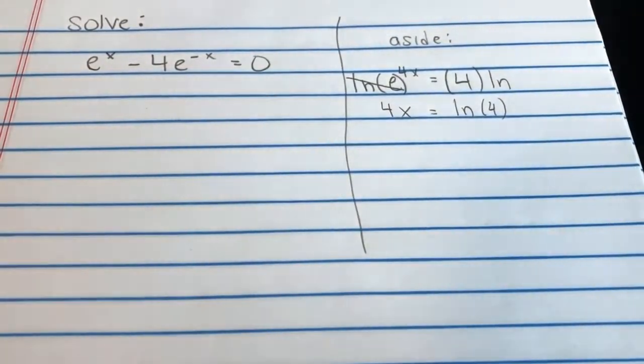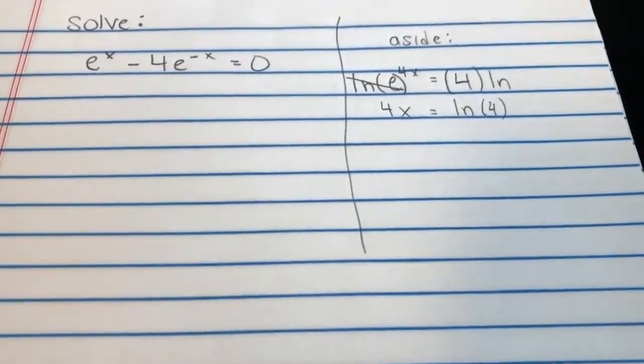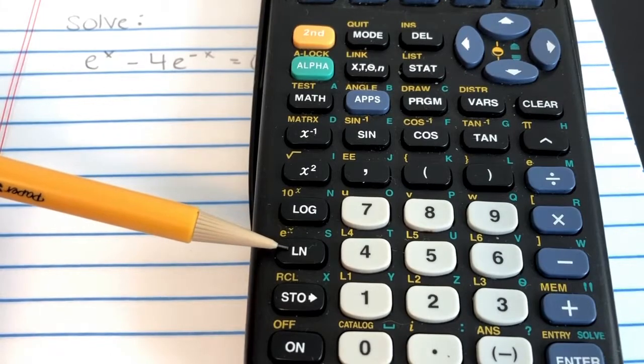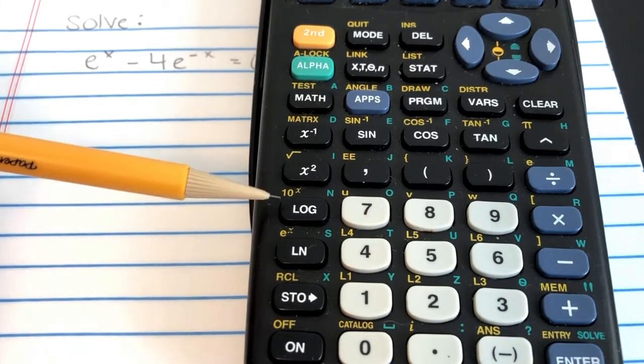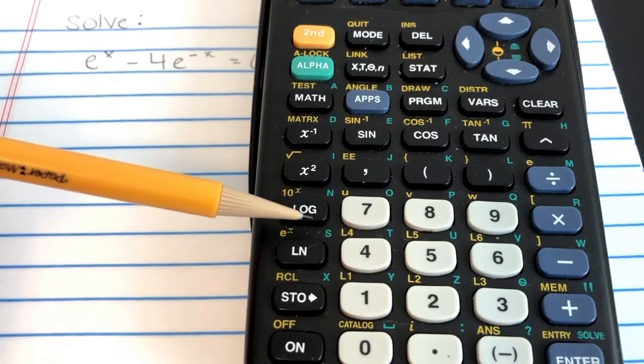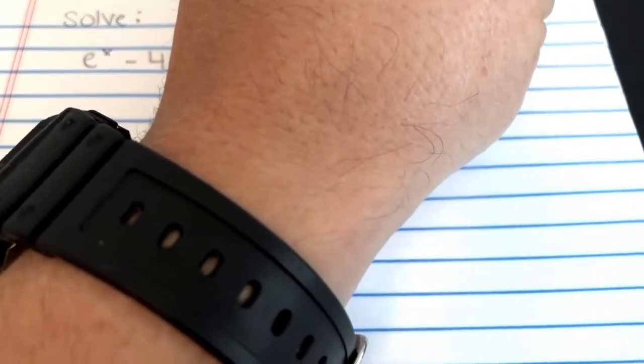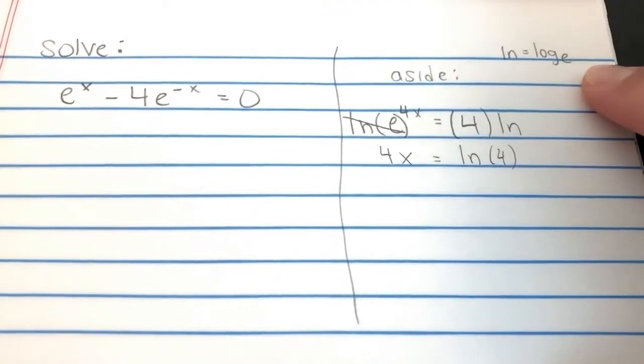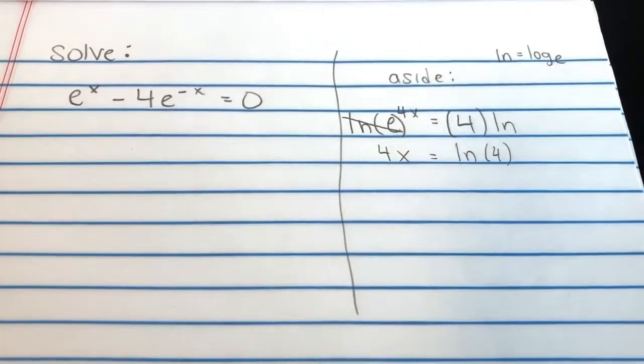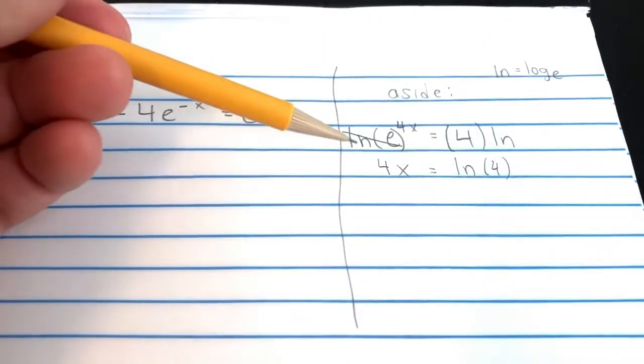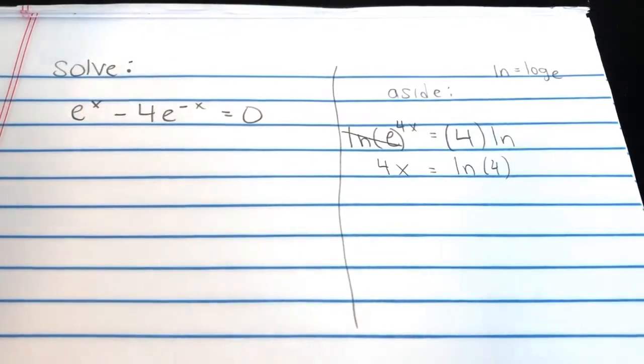Now, this is something that you need a calculator for. You have something like this. You've got your ln button. All ln is is a log, but the base is E. So ln is just log base E. Let me get that to focus. All right, that's all it is. It's nothing special. But because it's log base E, if we ln and E, they cancel each other out.